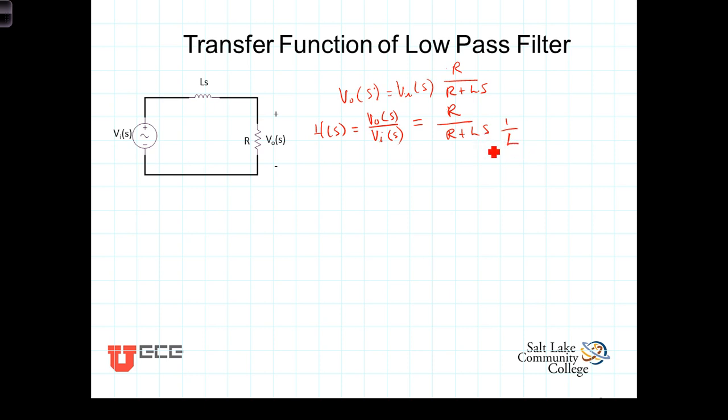1 over L times LS, the L's cancel and we're left with S, or the 1 in front of it, coefficient of 1, and then we'll have R over L.